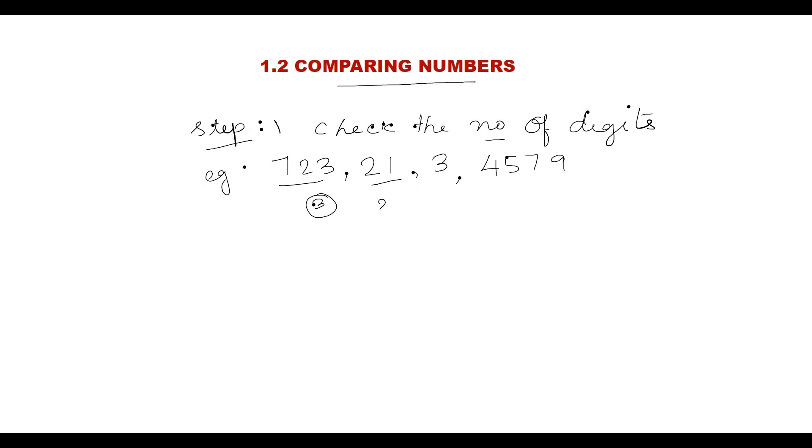Now checking the number of digits in each number. The first number contains 3 digits, second number 2 digits, third number 1 digit, and fourth number is 4 digits. From this, we can conclude that 3 is the smallest number since it is a 1 digit number, and 4579 is the greatest number since it is a 4 digit number.